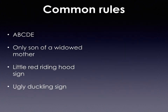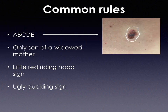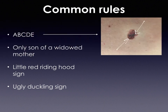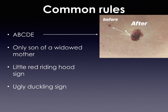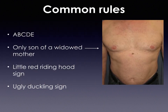Among the most common rules, I'd like to remind you of the ABCDE rule, which is extremely easy to teach also to patients. It consists of five criteria: Asymmetry, irregular Borders, more than two Colors, Diameter bigger than six millimeters, and history of Evolution.